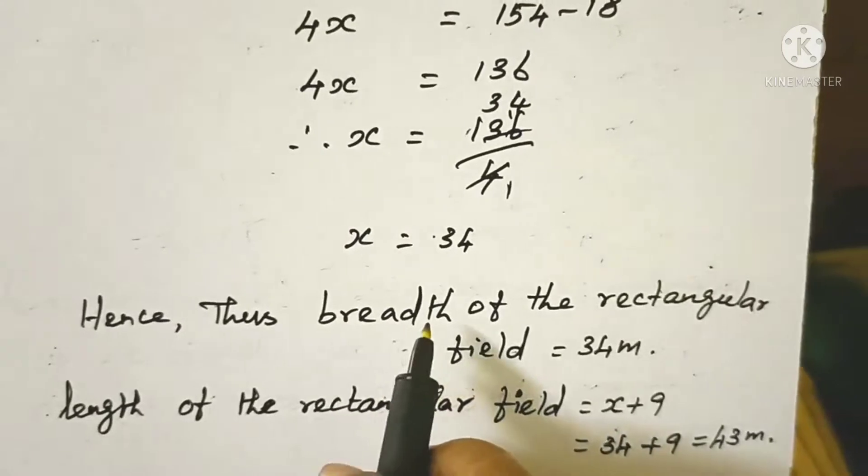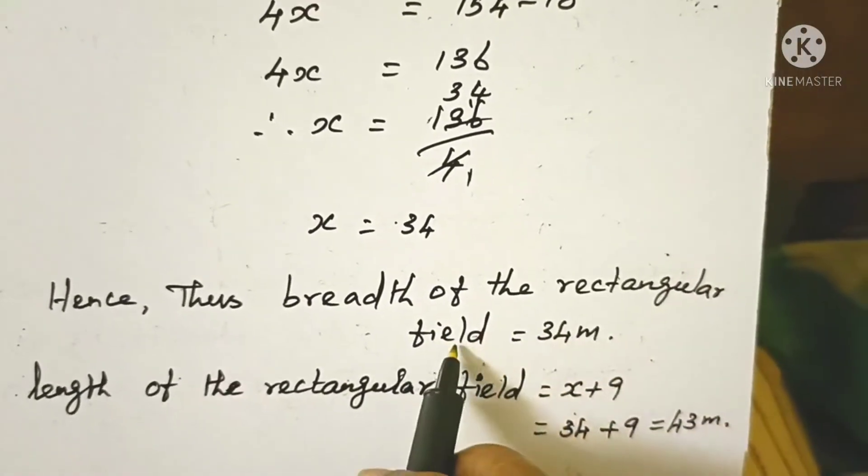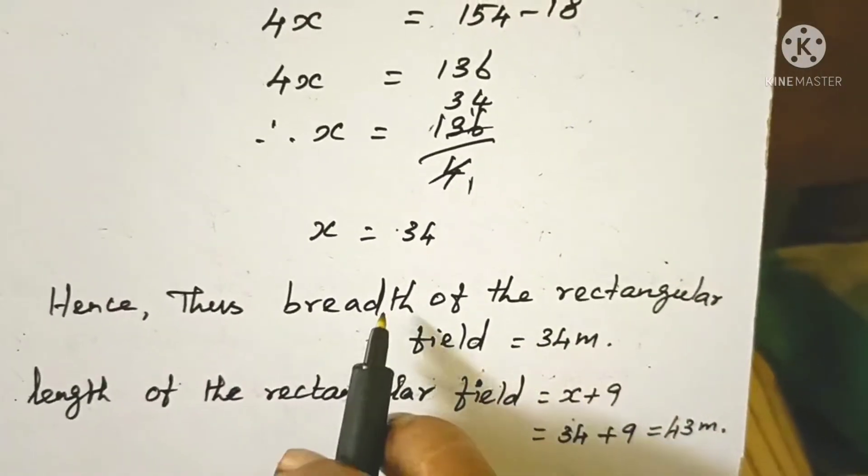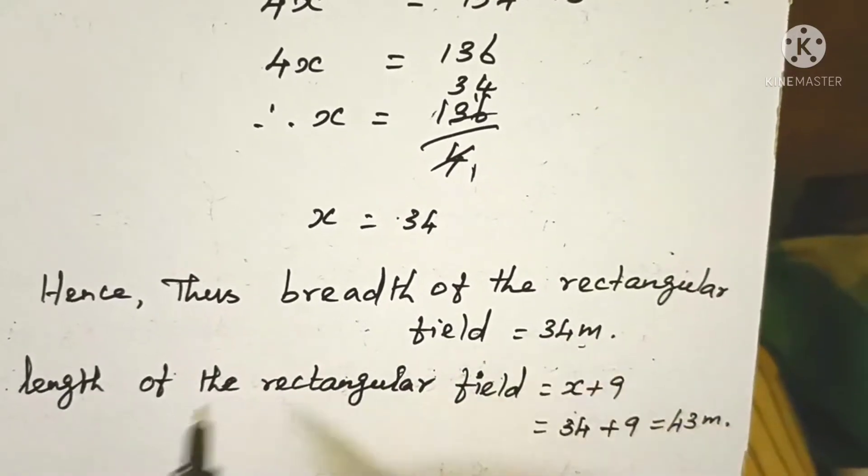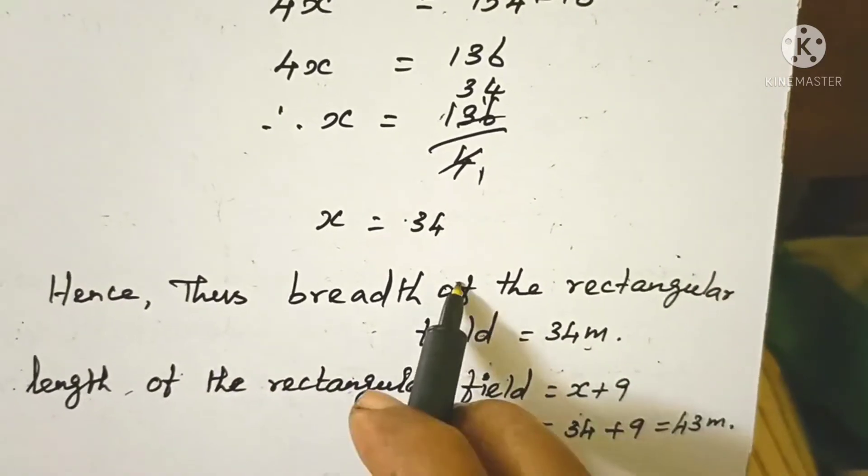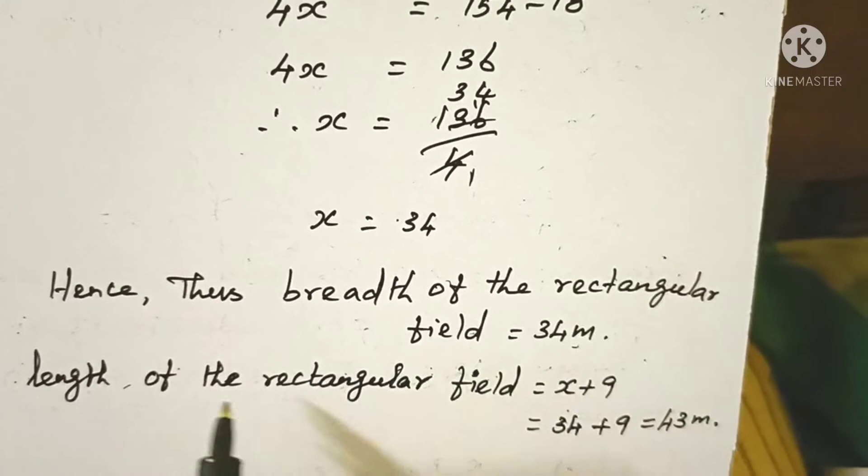Hence, thus, the breadth of the rectangular field is 34 meters.